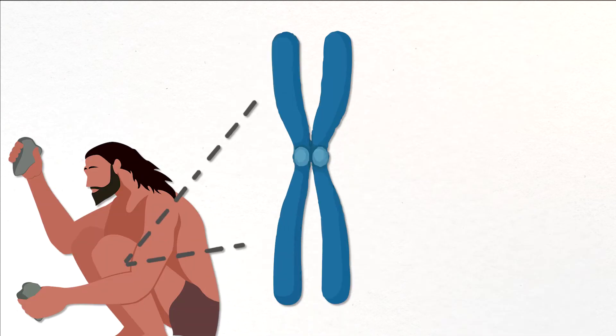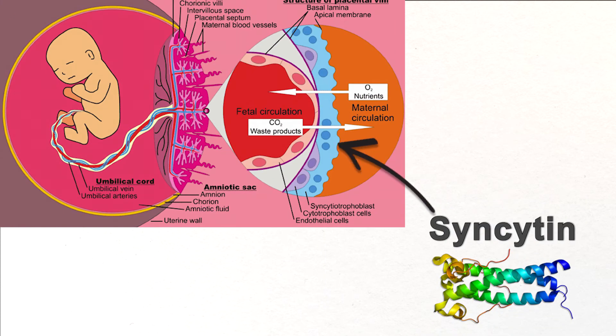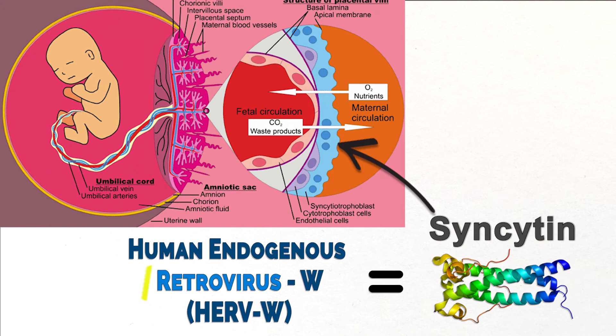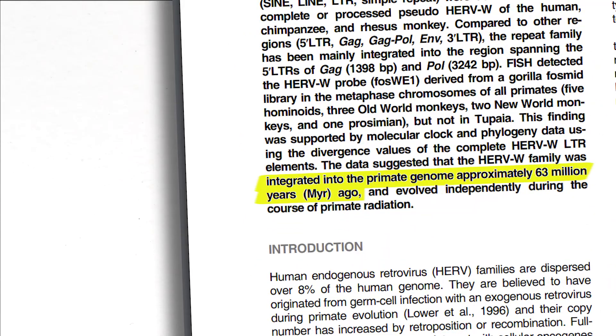As much as 8% of the human genome was acquired through horizontal gene transfer. Syncytin, a protein that helps create the placenta in humans, is viral DNA integrated into the primate genome approximately 63 million years ago.